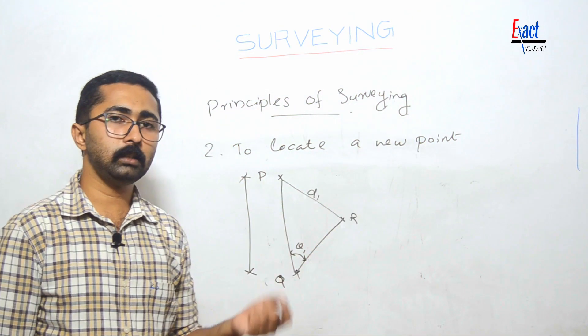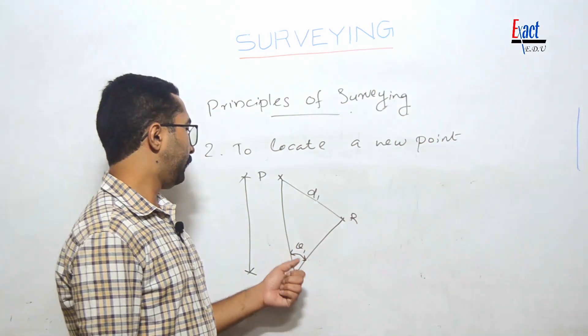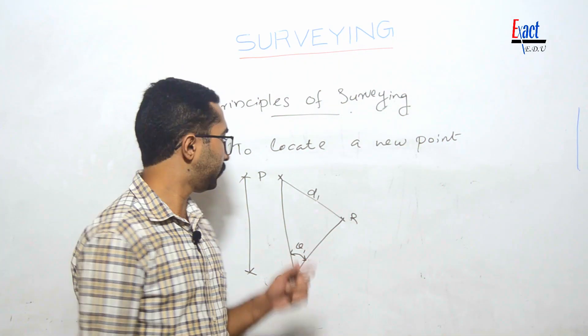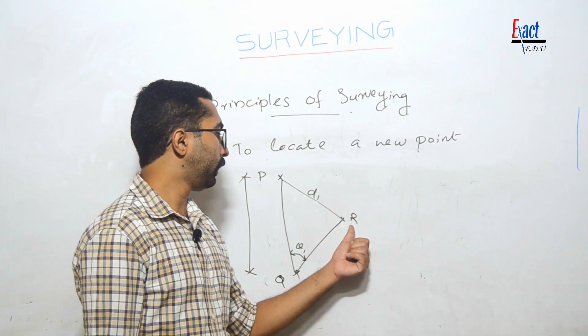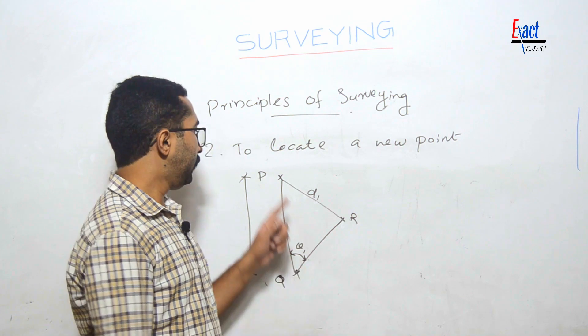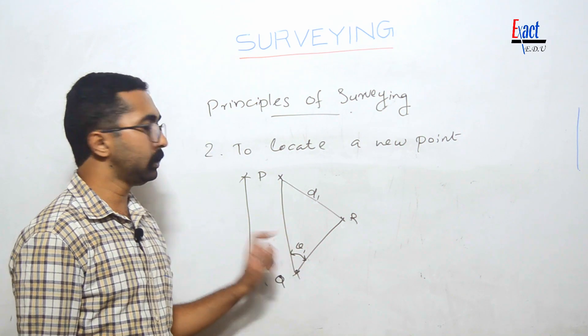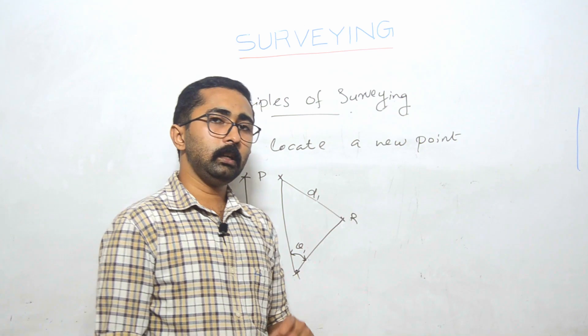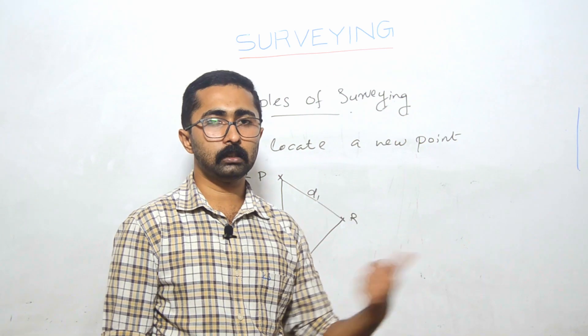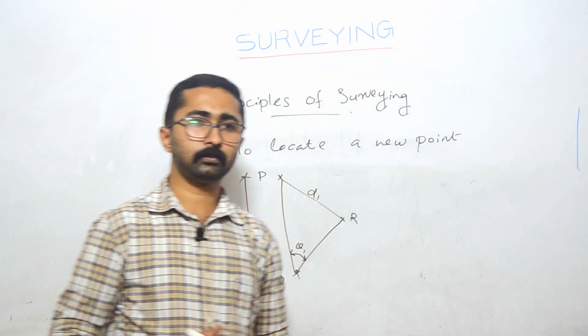To locate a new point, at least two measurements from the reference points are required. These measurements can be angular measurements or linear measurements. These are the two main principles of surveying.